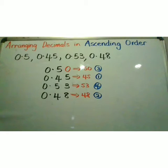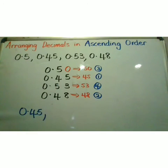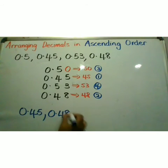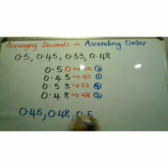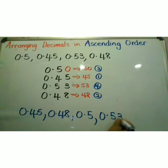So the first decimal fraction I am going to write will be 0.45. My second decimal fraction will be 0.48, followed by 0.5 — I put the original decimal fraction given, not 0.50. And my last decimal fraction will be 0.53.